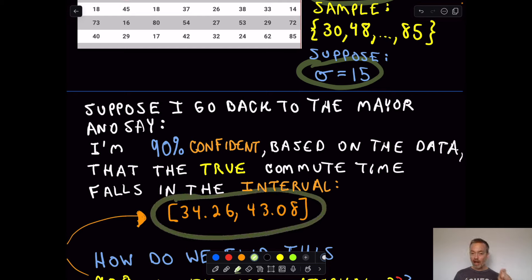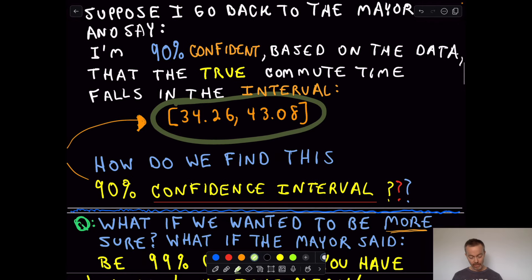And I say, I am 90% confident. I don't know for sure, but I'm 90% sure that the true average commute time falls in this interval of 34.26 minutes up to 43.08 minutes. And she said, Oh, I've changed my mind. I need to be even more sure.